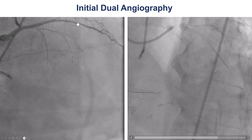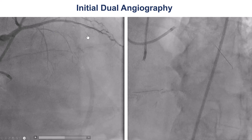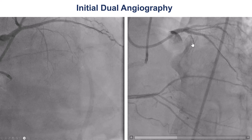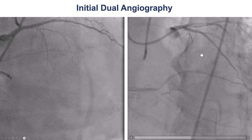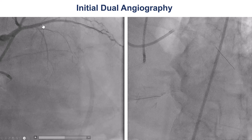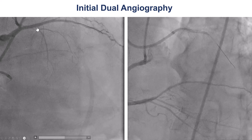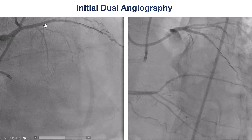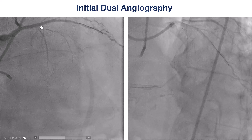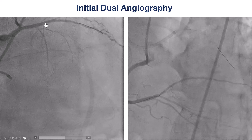We can see it here as well. There is not really quite a line-up of this branch with the LAD that is filling retrogradely. Essentially, the LAD is probably occluded somewhere in this segment. It is unclear where the proximal cap is, and there is also a stent there.